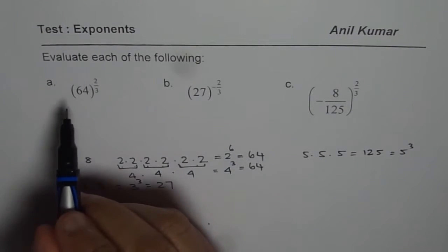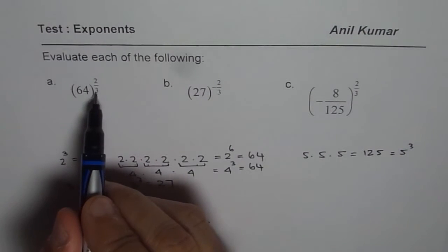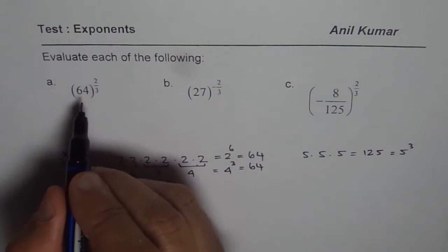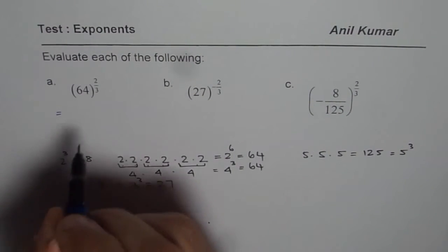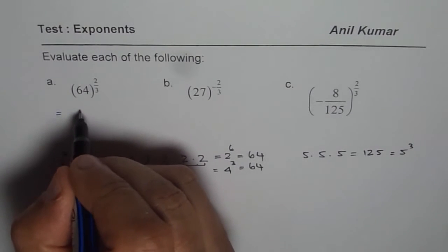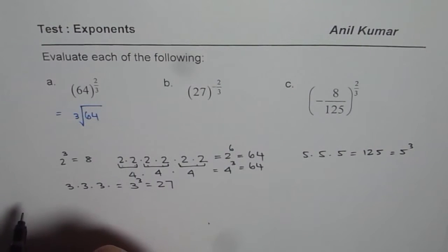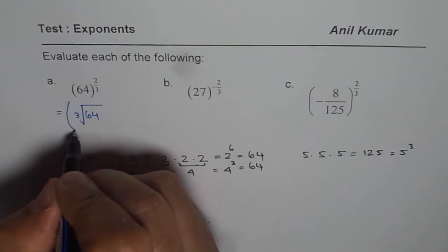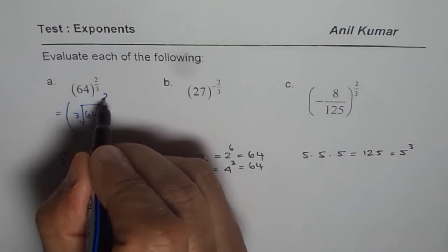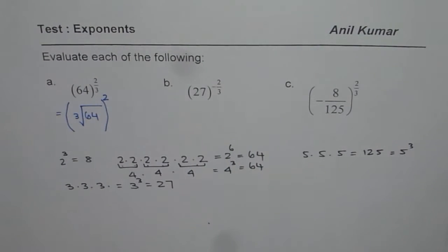First one, 64 to the power of 2 over 3. What does it mean? It really means that we should first find the cube root of 64. Once we find cube root of 64, then we should square it. If you follow these steps, you should easily get the right answer.